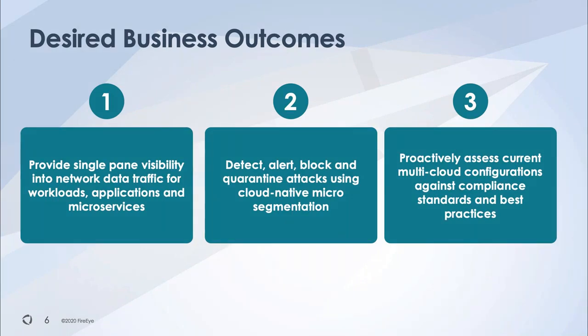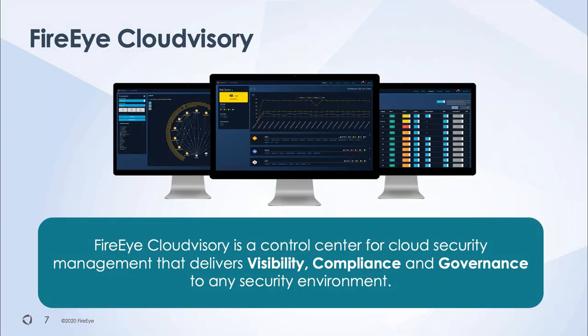Based on these concerns and observations, we can conclude that a potential solution should provide the following desired business outcomes: first, full visibility into workloads, applications, and microservices — both from an asset point of view and network data traffic related to those assets; second, consistent use of micro-segmentation and least privilege to better withstand attacks through improved detection, alerting, and even blocking or quarantining; and third, the ability to proactively assess any multi-cloud configuration against compliance standards and industry best practices.